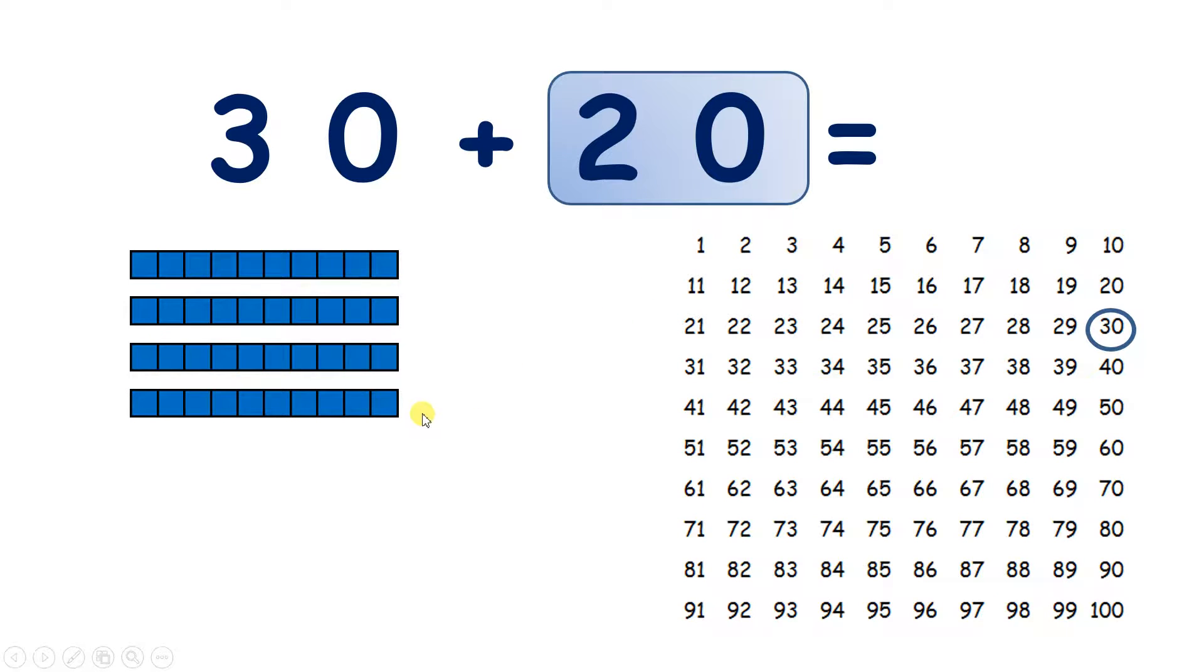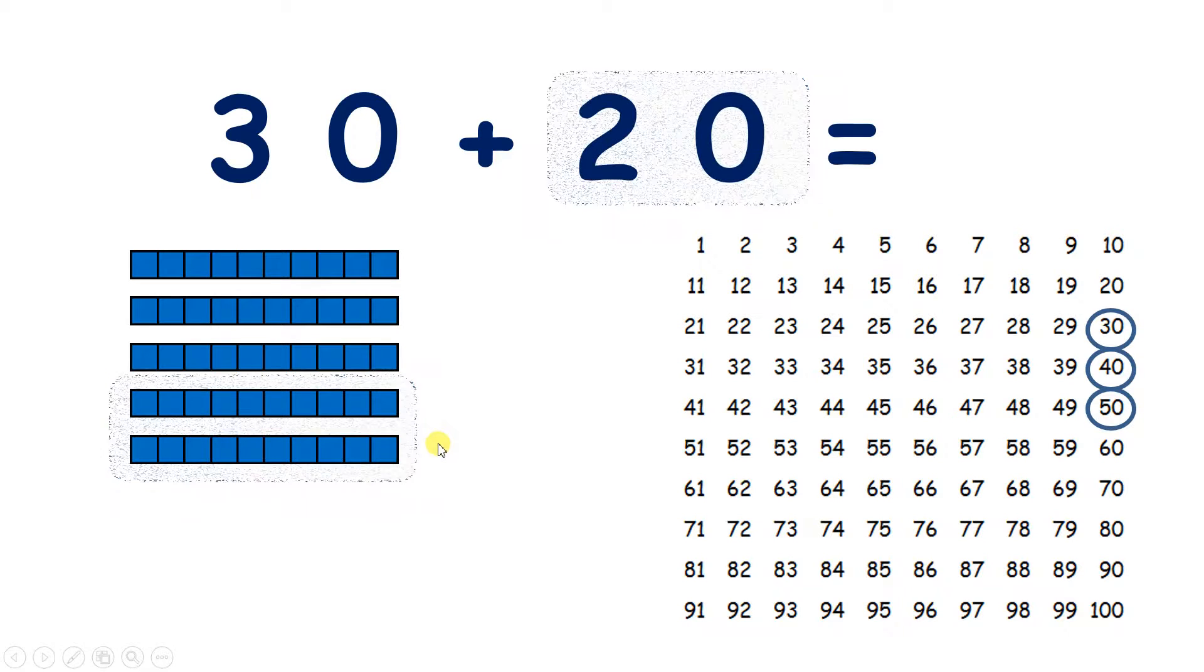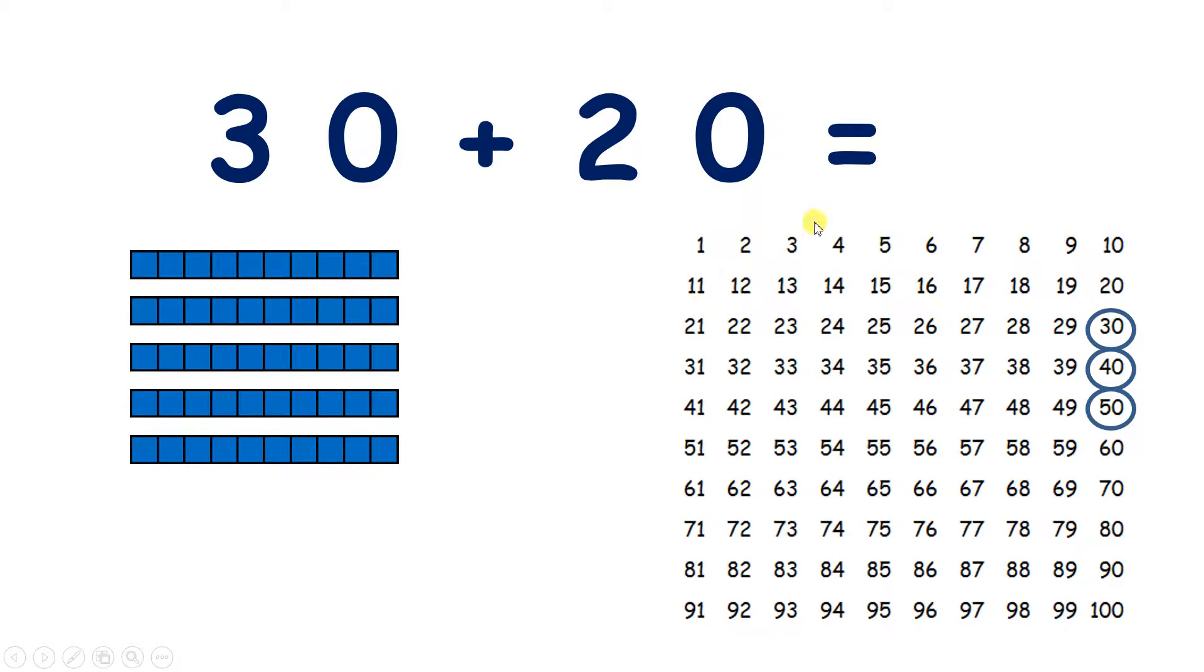So if I add one 10, I'll have 4 tens, so 40. And if I add another 10, I'll have 5 tens altogether, so I'll have 50. So I've added 20 because I've added 2 tens, and this has given me my answer of 50.